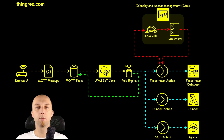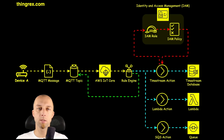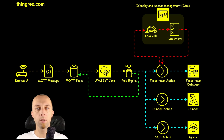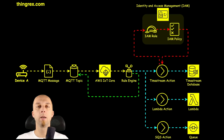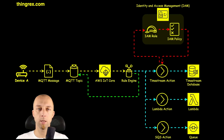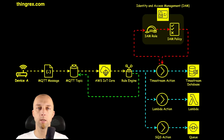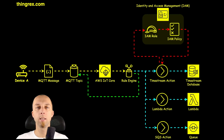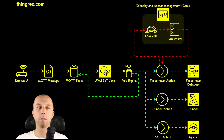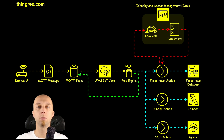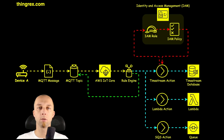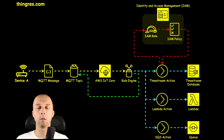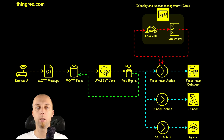This way, you can process MQTT messages on the fly and invoke various actions without worrying about underlying infrastructure. In my opinion, AWS IoT Rule Engine is a very powerful tool you should use during your design and implementation of any IoT solution.